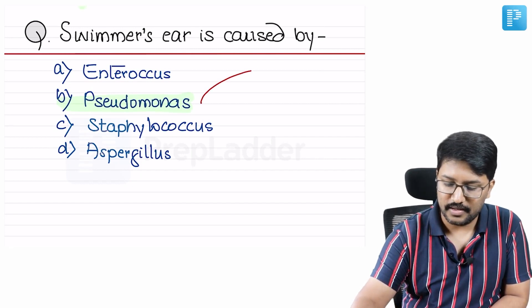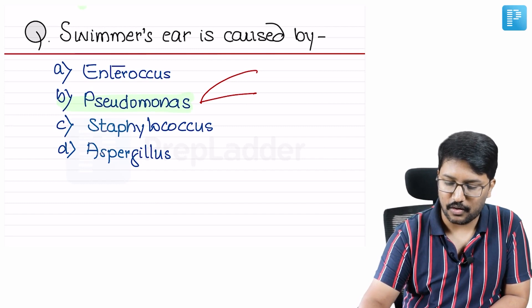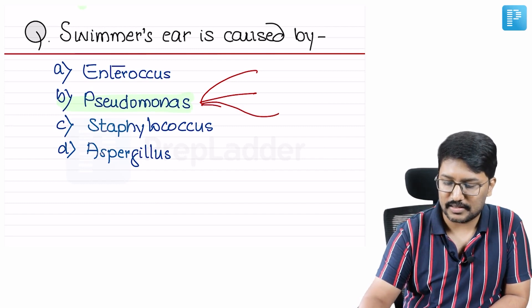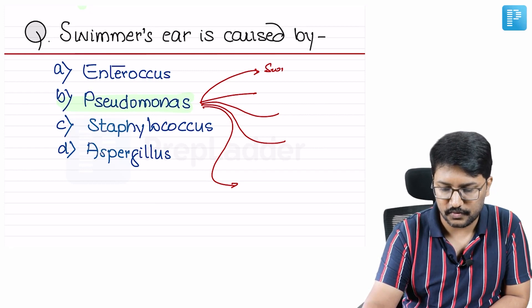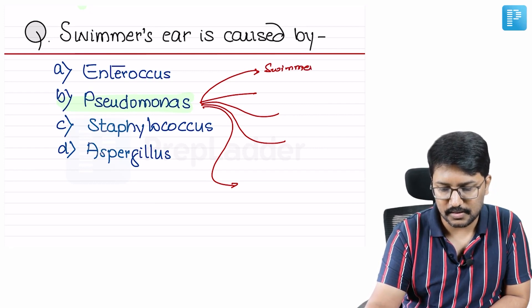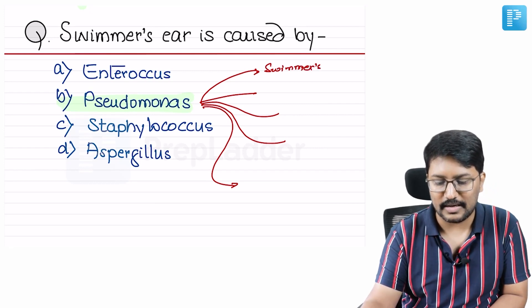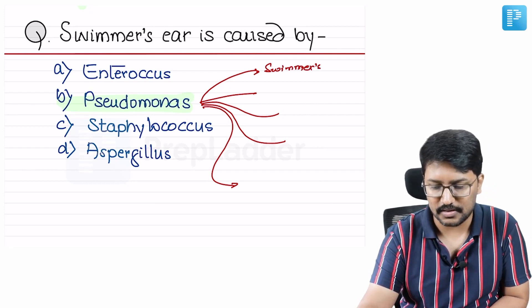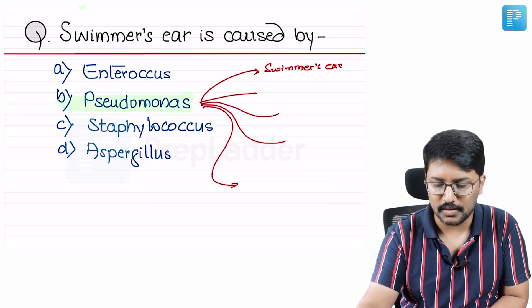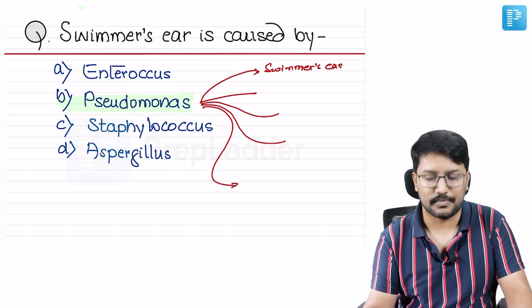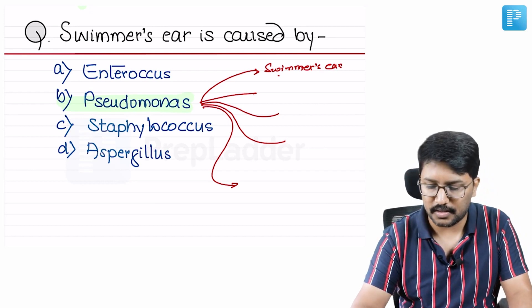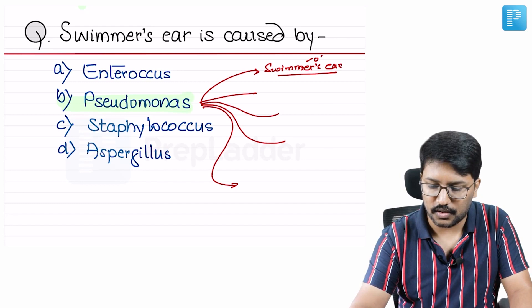Pseudomonas causes various manifestations, and all of them have been asked as MCQs in the super-specialty entrance. The first one, as we now know, is swimmer's ear — a form of simple, uncomplicated otitis externa.